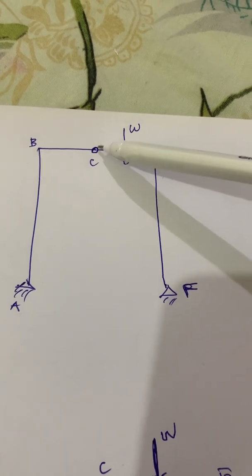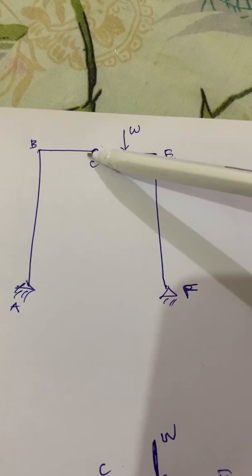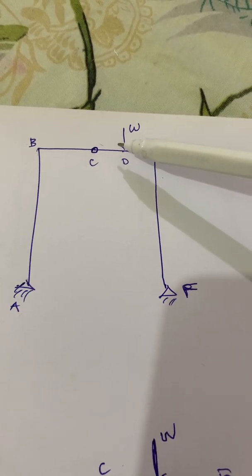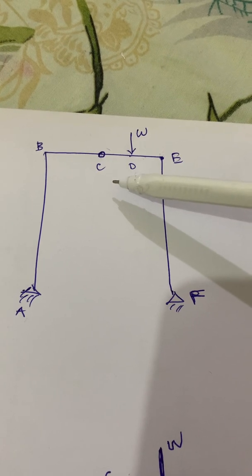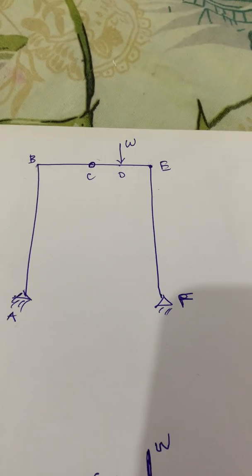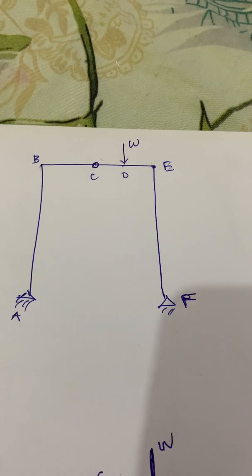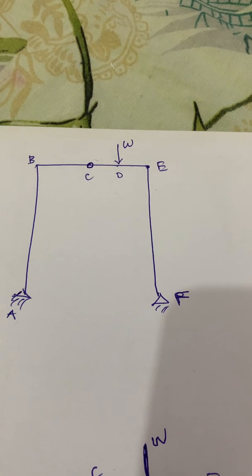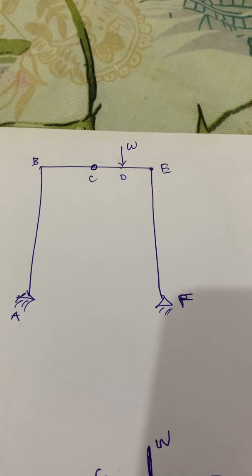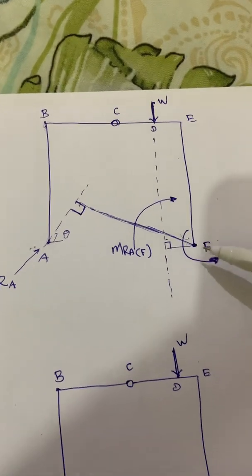On the other hand, this hinge C would behave such that there is no moment transfer, only shear transfer. Now let us apply the principle of equilibrium of moments on the whole structure. As we know, about any point in the plane, if we take the moment for a particular couple, that value is constant.